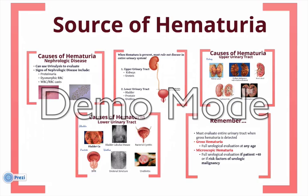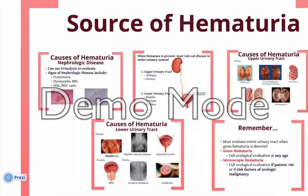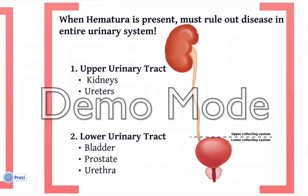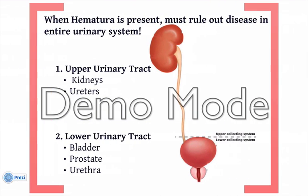Hematuria can be a sign of nephrologic disease. Some findings on urinalysis that may lead you more toward a nephrologic diagnosis would include proteinuria, dysmorphic red blood cells, or white or red blood cell casts. Generally speaking, when hematuria is present, one must rule out urologic disease.